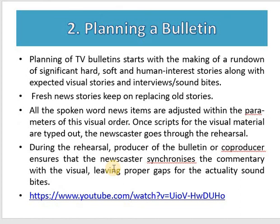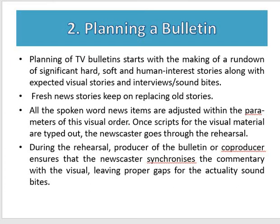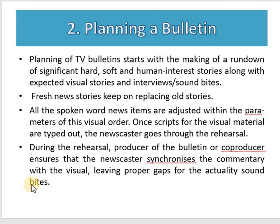Planning of television bulletins starts with making a rundown of significant hard, soft, and human interest stories along with expected visual stories and interviews or sound bites. Fresh news stories keep replacing old stories. All the spoken news words are adjusted with the parameters of the visual orders. Once scripted and visual materials are taped out, the newscaster goes through rehearsal. During rehearsal, the producer or co-producer ensures that newscasters synchronize the commentary with the visuals, leaving proper gaps for actuality sound bites.